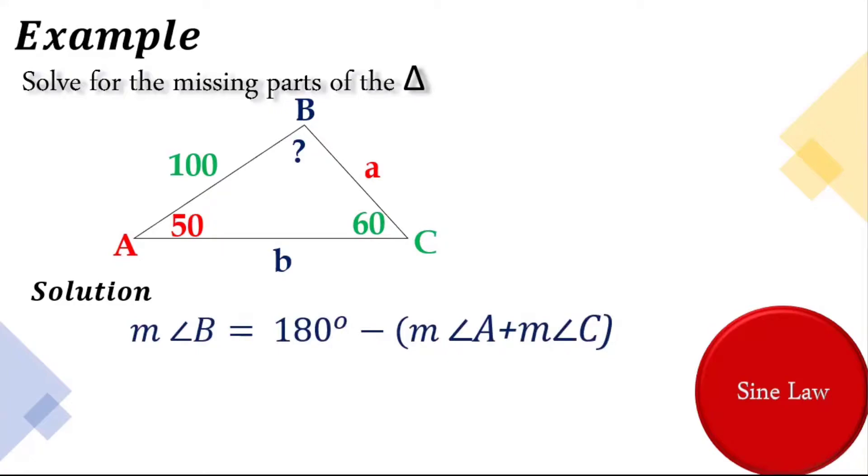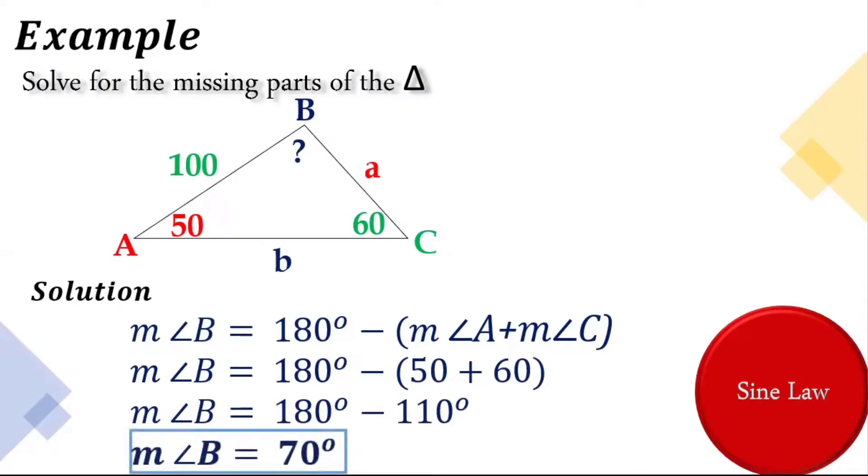So measurement of angle B is equal to 180 degrees. Take note, my dear students, that 180 degrees is the sum of all angles inside the triangle. And of course, we're going to subtract it by the measurement of angle A and the measurement of angle C, which is 50 and 60 degrees. So we have now the measurement of angle B is equal to 180 degrees minus 110 degrees, and it gives us the answer 70 degrees.